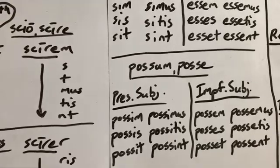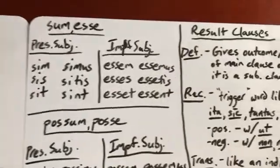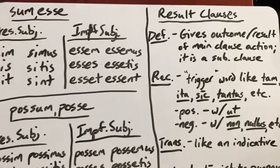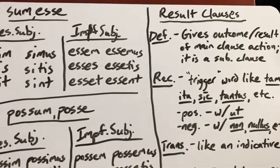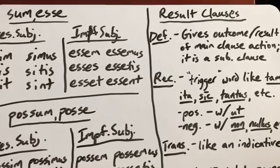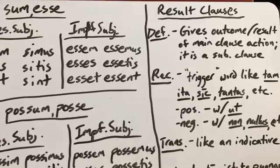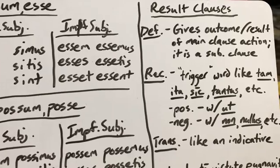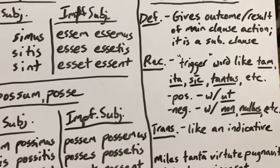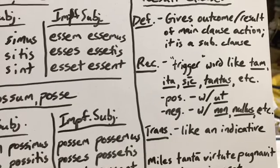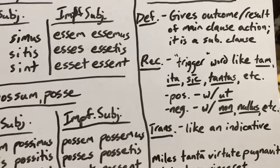We also had result clauses, which was a new subjunctive use. A result clause gives the outcome or the result of the main clause action. It is a subordinate clause as well, meaning it cannot stand by itself in a sentence — it has to have another clause that it's depending on. How to recognize it: the main thing is you're going to want to look for what's called a trigger word, things like 'tam,' 'ita,' 'sic,' 'tantus.' They're adverbs or adjectives that indicate a degree.